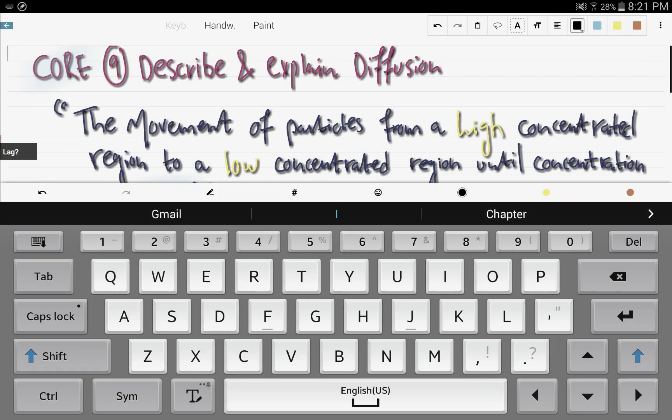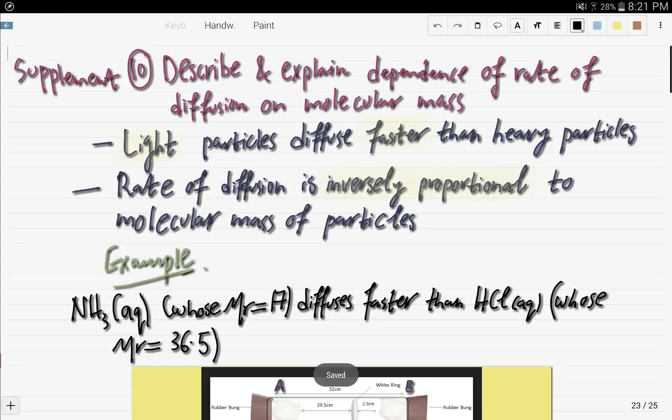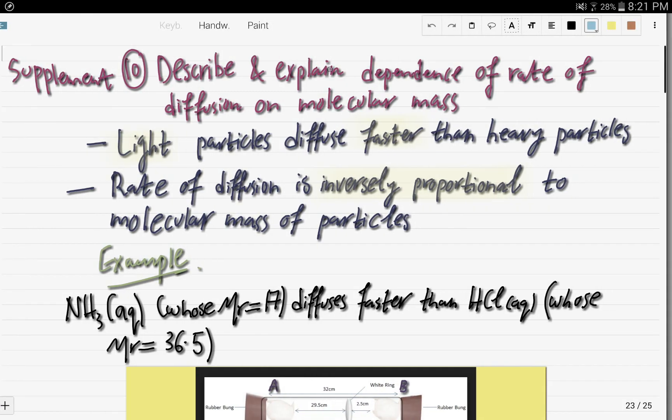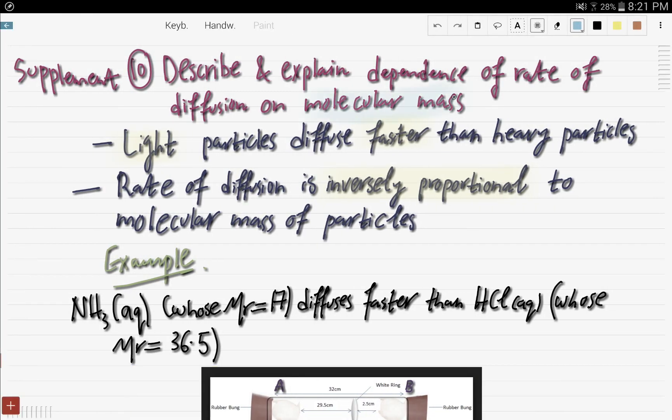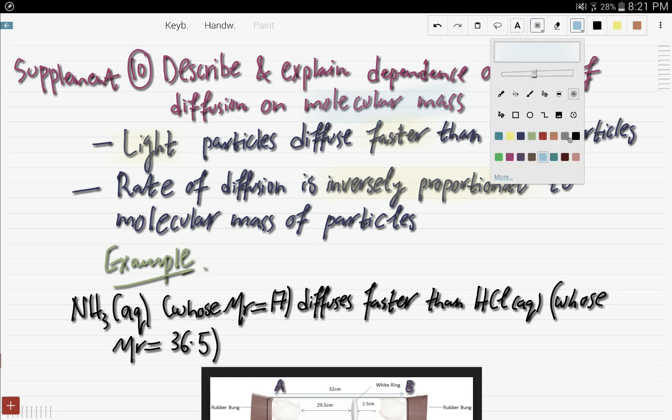That was also a pretty easy objective to cover. Now let's go to the last objective of chapter number one. And that is objective number 10. We need to describe and explain the dependence of the rate of diffusion on the molecular mass. So the rule states, this is a rule, this is kind of like you have to know this, that's a rule.